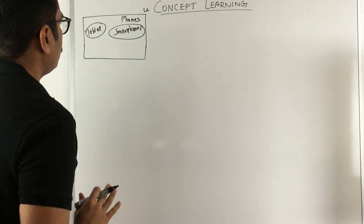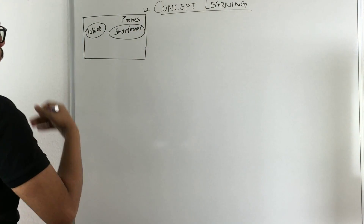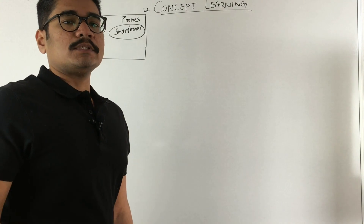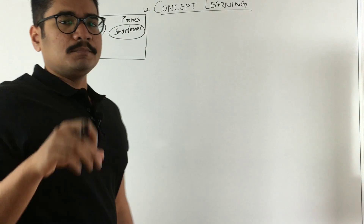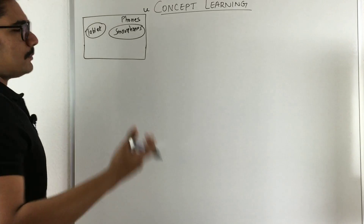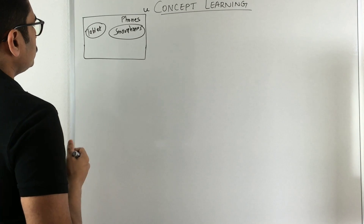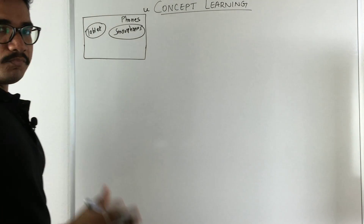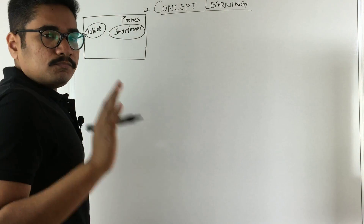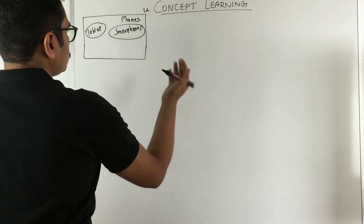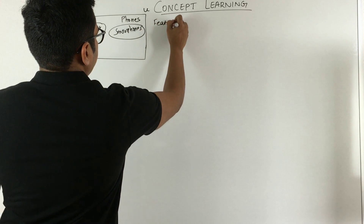Just for our convenience and for understanding concept learning, I'll restrict to these two concepts — smartphone and tablet. It can be any brand: Apple, Samsung, or any other. In tablet phones you can put a SIM card and make calls, so it has a cellular extension. Similarly for smartphones, that is the basic use. Now there are different features which distinguish tablets and smartphones, and I'll just take four unique features for convenience.